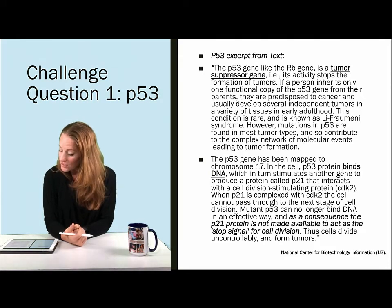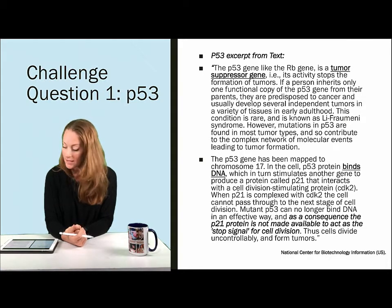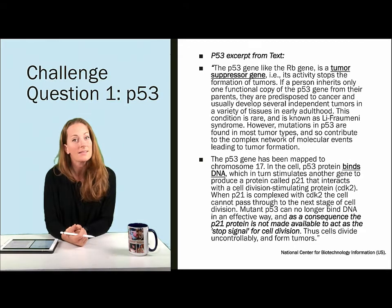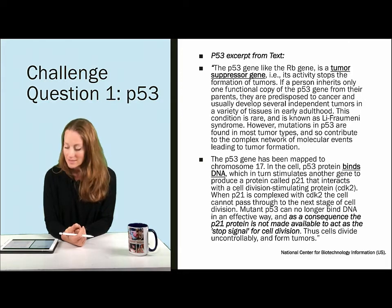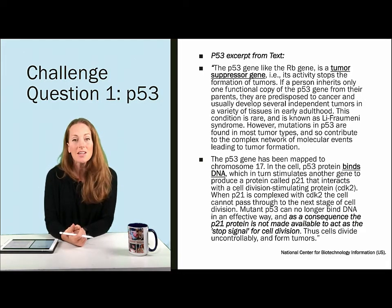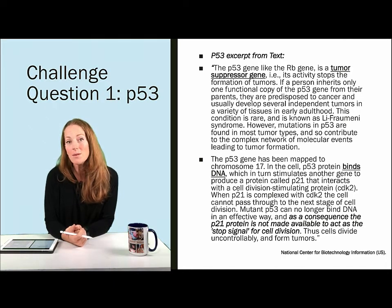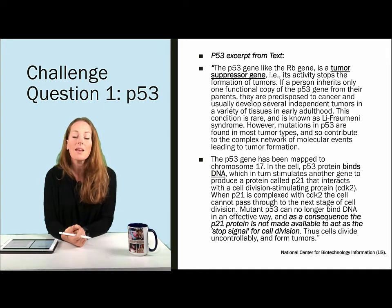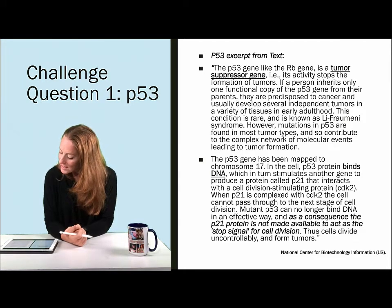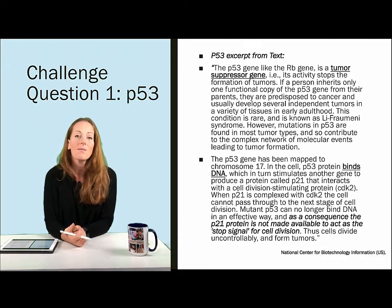The P53 gene has been mapped to chromosome 17. In the cell, P53 protein binds DNA, which in turn stimulates another gene called P21. Ultimately, P21 stops the cell cycle, so if the cell has mutations, it cannot pass through to the next stage of cell division. However, mutant P53 can no longer bind the DNA and do its job. As a consequence, P21 and other proteins are not made to stop the cell cycle, leading to cells dividing uncontrollably and forming tumors.